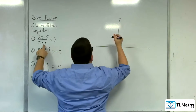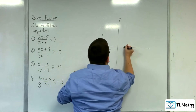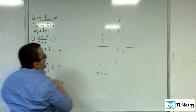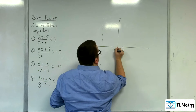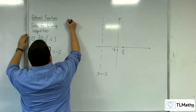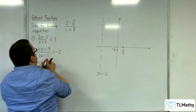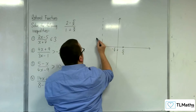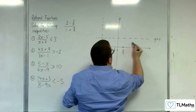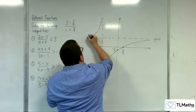So vertical asymptote at minus 7. Crossing the x-axis at 5 halves. Crossing the y-axis when x is 0 at minus 5 sevenths, so somewhere like there. And horizontal asymptote: dividing top and bottom by x, we're going to get (2 − 5/x) over (1 + 7/x). So as x tends to infinity in either direction, we're going to get y equals 2. The curve is tending towards those two asymptotes, something like this, and here's the rest of the curve up there.